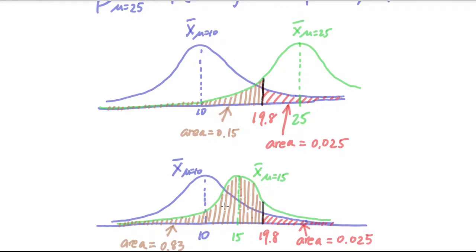On the second chart, mu equal to 15 and mu equal to 10, they're really close to each other. So beta is actually much larger.